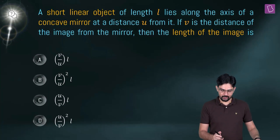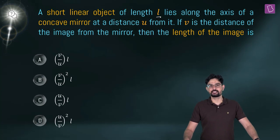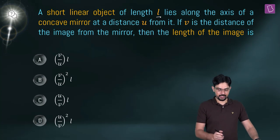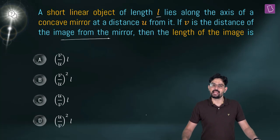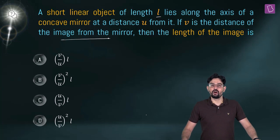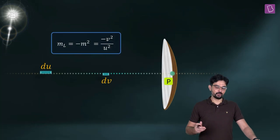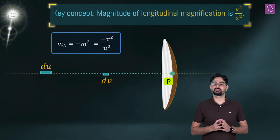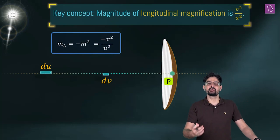A short linear object of length L lies along the axis of a concave mirror at a distance U from its pole. If V is the distance of the image from the mirror, then you have to find out what is the length of the image. Recall longitudinal magnification, where we found out that the longitudinal magnification is minus M squared, which is minus V squared by U squared.